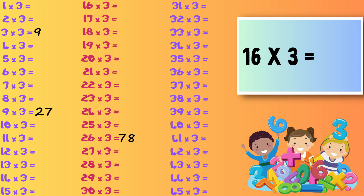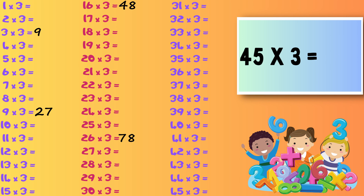Sixteen times three — forty-eight. Forty-five times three — one hundred and thirty-five.